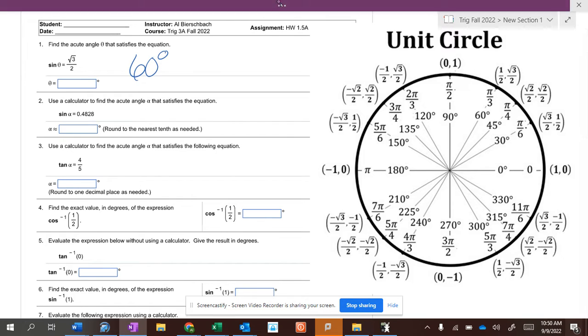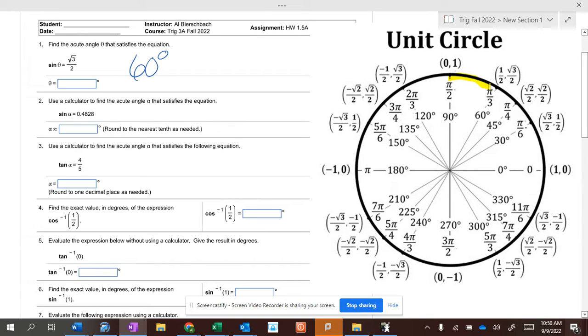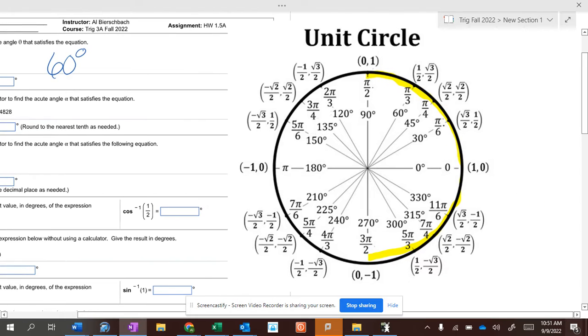Well, for sine and for tangent, you use everywhere from 90 degrees to negative 90 degrees. We don't call it 270 or 330 degrees. We call it from negative 90 degrees to 90 degrees for sine and for tangent. For both sine and tangent, we go from negative 90 degrees to 90 degrees.